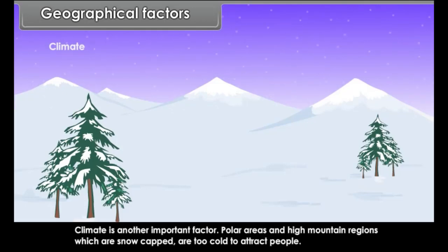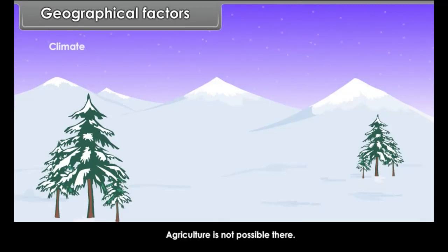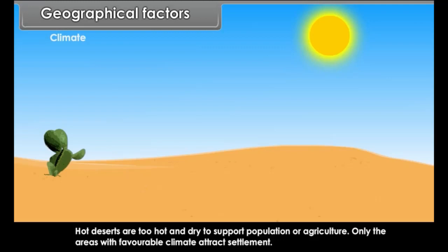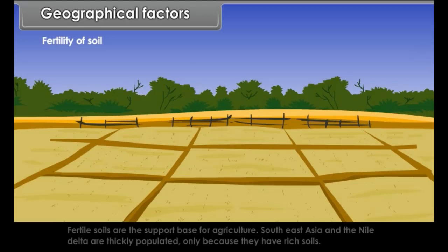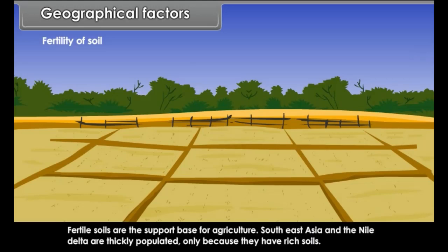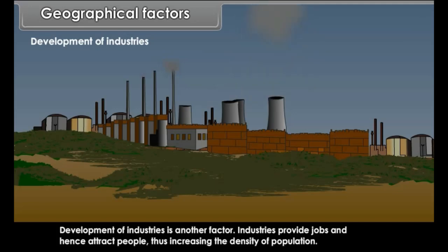Climate is another important factor. Polar areas and high mountain regions which are snow-capped are too cold to attract people, and agriculture is not possible there. Hot deserts are too hot and dry to support population or agriculture. Only areas with favourable climate attract settlement. Fertility of soil also attracts people, as fertile soils support agriculture — Southeast Asia and the Nile Delta are thickly populated because they have rich soils. Development of industries provides jobs and attracts people, increasing population density.